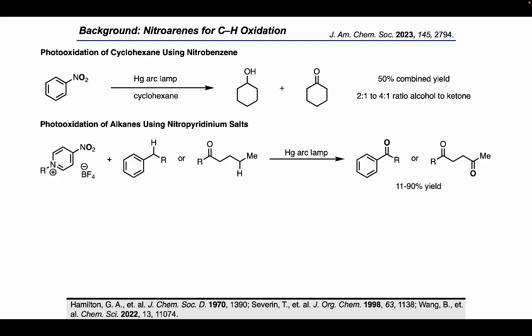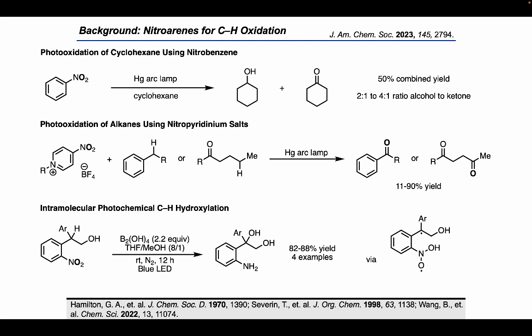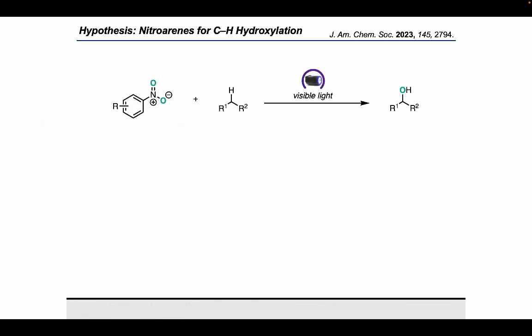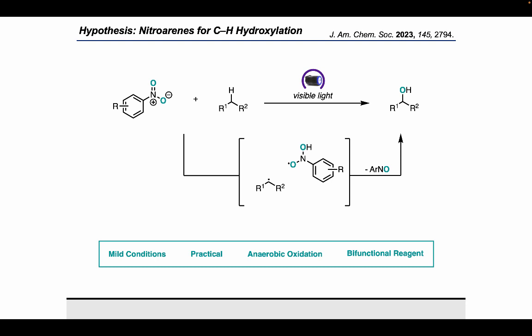Recently, Wang and co-workers reported visible light-promoted intramolecular reactions of nitroarenes and, within their scope, demonstrated four examples of benzylic hydroxylation in high yields. They proposed the reaction proceeds via an HAT event to generate benzylic radicals, which then get hydroxylated by the nitroarene to afford the products. Taking all of this into account, we hypothesized that photo-excited nitroarenes could be used to promote C-H hydroxylation of alkanes, acting as both the HAT agent and the oxygen source, under mild and anaerobic conditions utilizing commercially available nitroarenes.